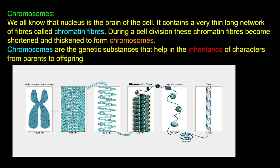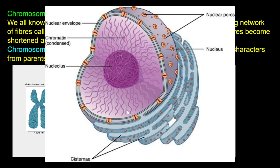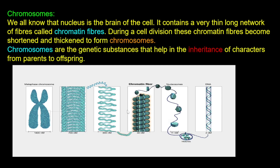In short, you can say DNA, which forms chromatin fibre. The chromosome is created by chromatin fibre, and chromatin fibre is DNA. DNA carries the characteristics from mother or father. This is the way to understand the chromosome.